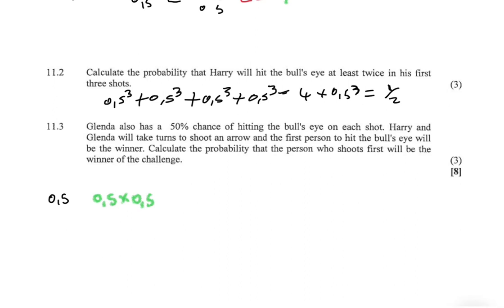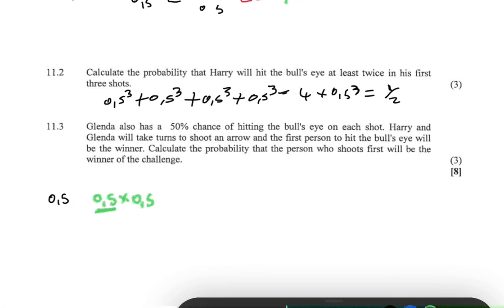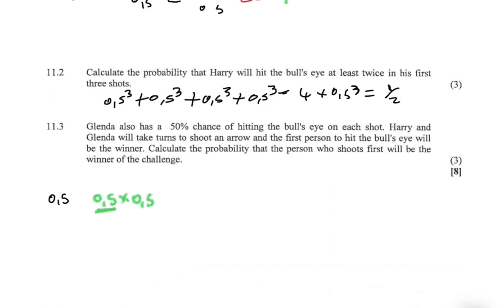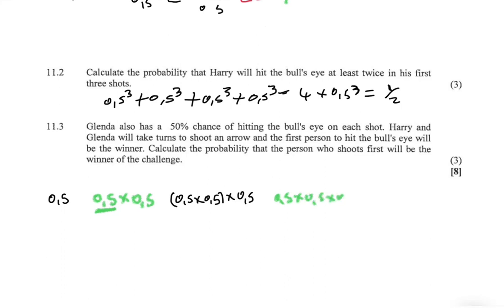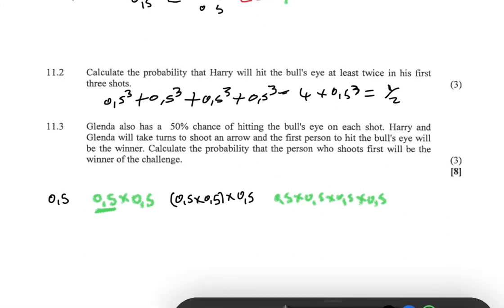Assuming Glenda also misses, Maguire comes back for his second shot. We carry the probability that both missed — 0.5 × 0.5 — and multiply by 0.5 for Maguire's second shot. If Maguire misses again, Glenda takes another shot, giving 0.5 × 0.5 × 0.5 × 0.5. We can see the pattern: Maguire's winning chances are 0.5, then 0.5³, then 0.5⁵, forming a geometric series.